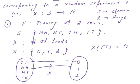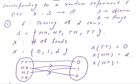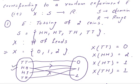Head-head has two heads, so it maps to real number 2: X(HH) = 2. Head-tail has one head, so X(HT) = 1. Similarly, tail-head also maps to 1: X(TH) = 1. Thus the possible values this random variable can take are 0, 1, and 2, mapping each outcome to a real number.